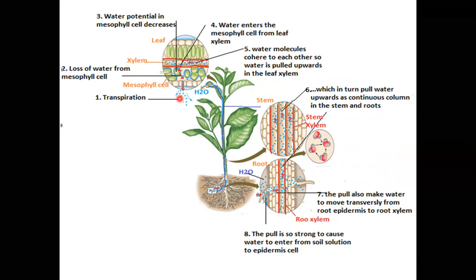Transpiration kya hai? Plant ke aerial parts — jo hawa mein parts hain — un mein se water ka loss vapors ki form mein hota hai. Aur khaas taur par leaves se water ka loss stomata ke zariye hota hai. So due to loss of water in the mesophyll cells of the leaves, water potential in the mesophyll cell decreases.